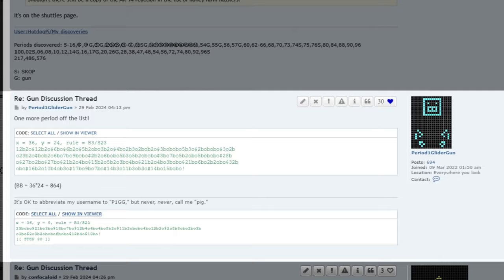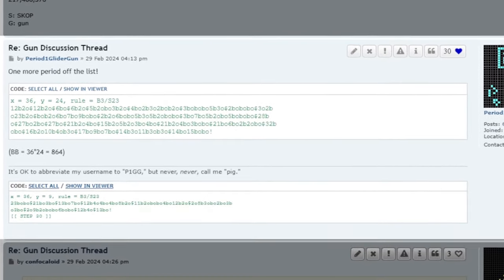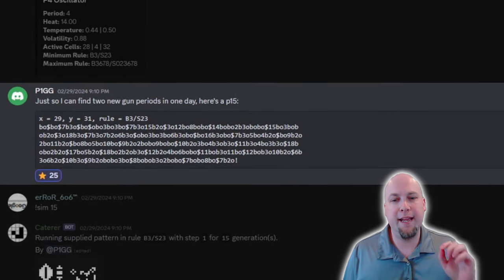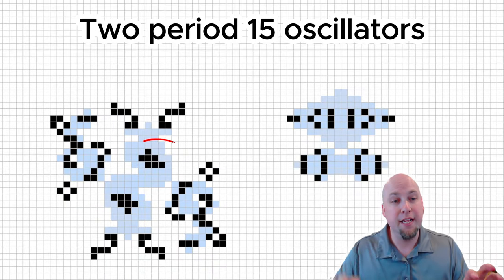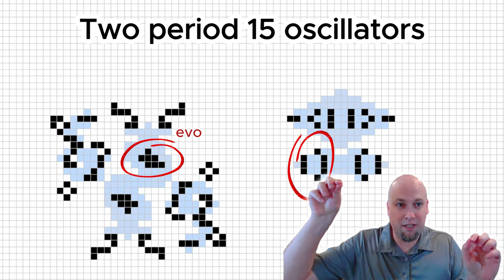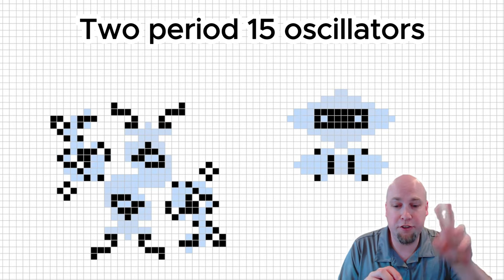And then slightly less than five hours after finding this period 16 glider gun, P-1GG did it again and found the first ever true period 15 glider gun. And this one, it was constructed in basically the same way. They took a period 15 Hassler and combined it with some other period 15 oscillator to sort of combine a B-heptomino Hassler with a spark to produce a glider that shoots off.